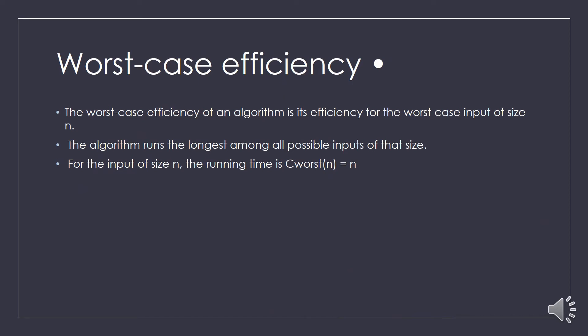Now let us understand the different cases for the sequential search algorithm. Worst case efficiency occurs when the algorithm runs for the longest duration. For sequential search, this happens when the algorithm must visit all elements in the array — that is, when the key is not found or is at the last position. So C_worst(n) equals n, since it checks all n elements.